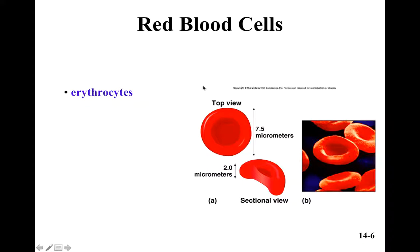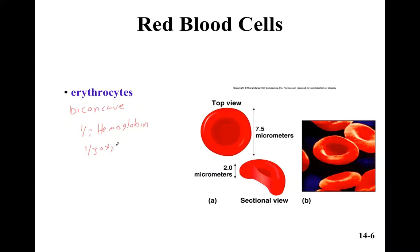Let's talk about red blood cells specifically. Red blood cells are called erythrocytes, and they are biconcave — kind of like a jelly donut that has been squished in the middle. They are one-third oxyhemoglobin and one-third deoxyhemoglobin.